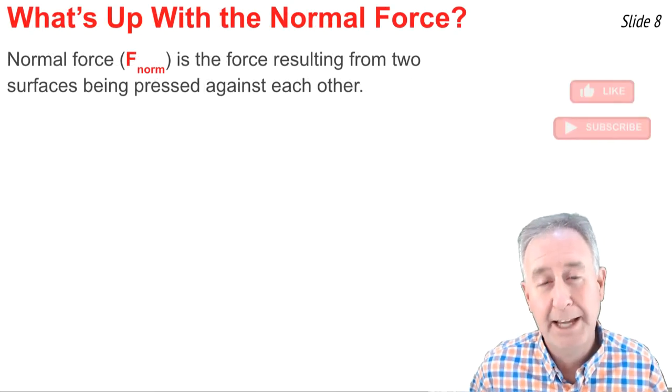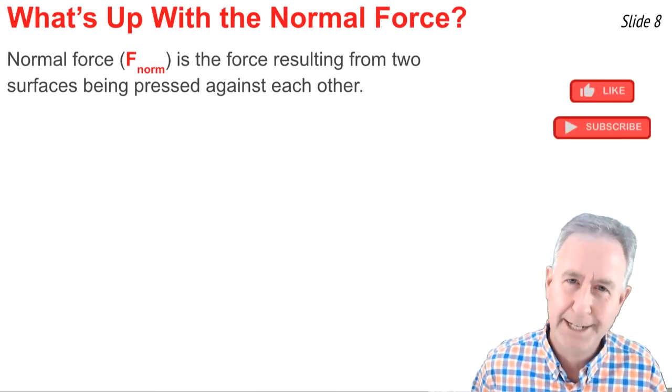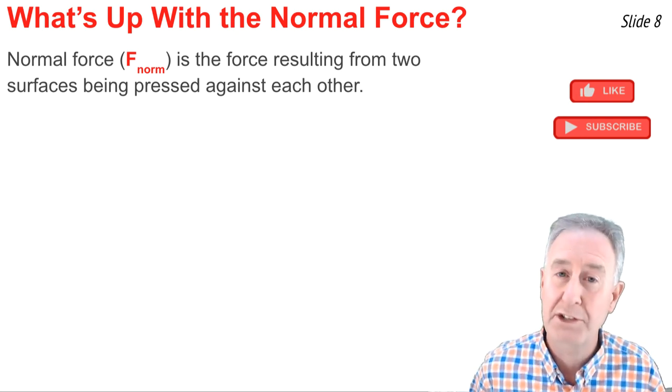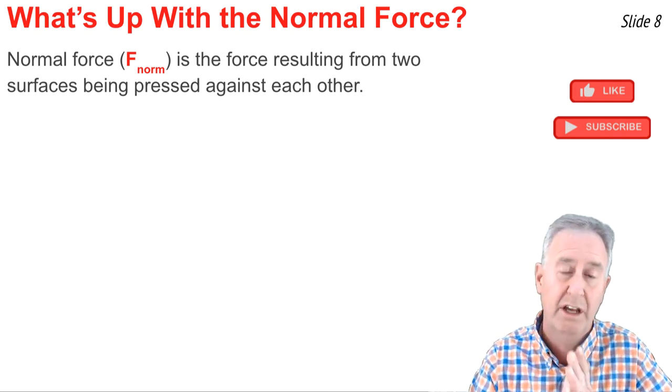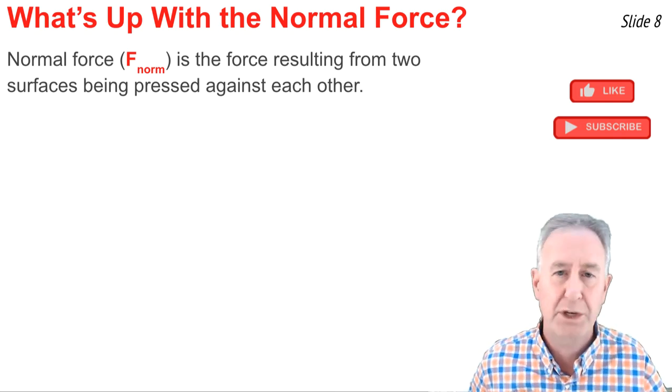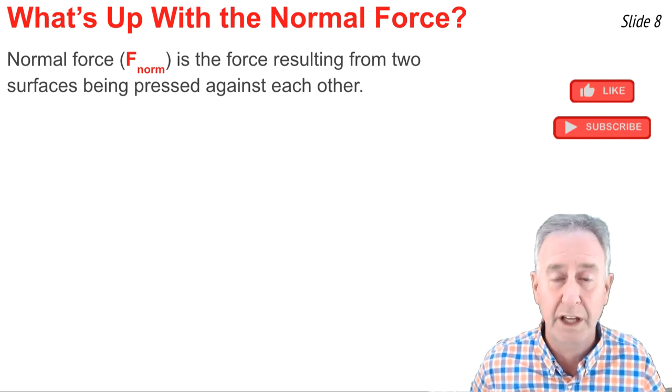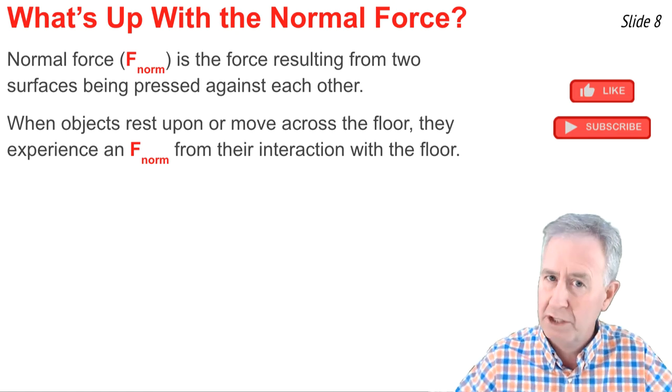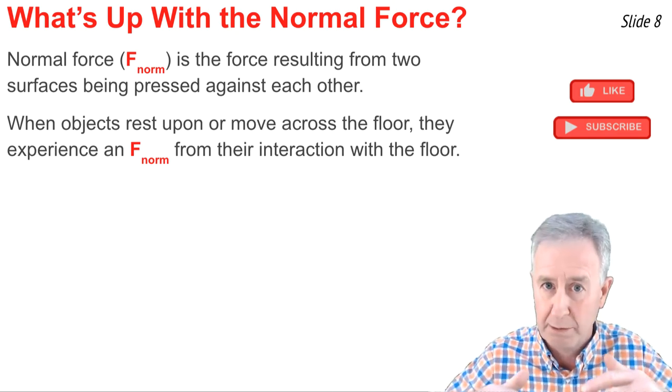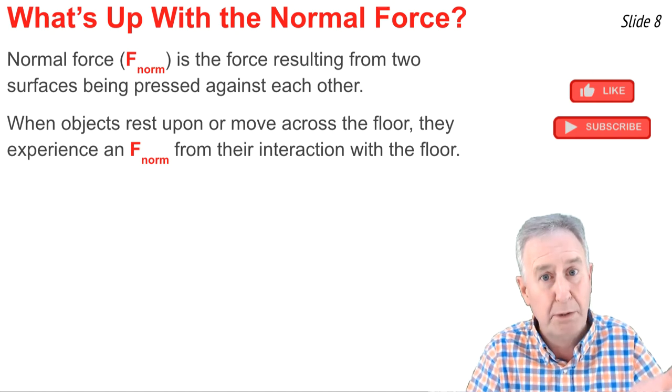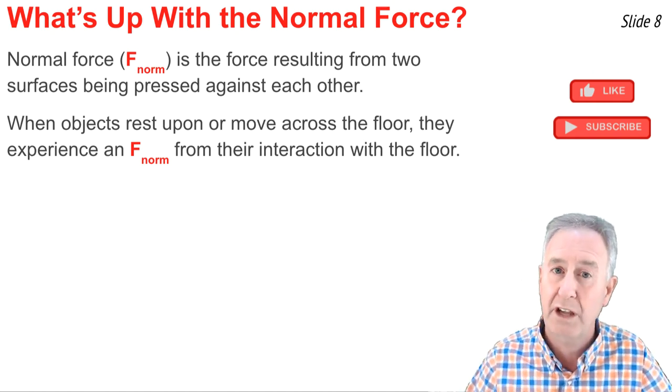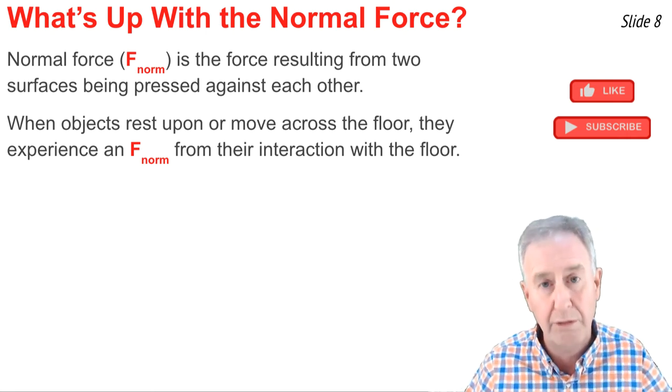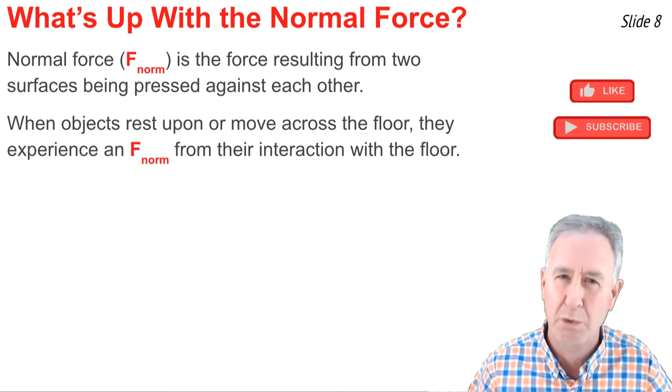Now something came up in that last question that I did not address, and if you caught it, it might have bothered you. And it has to do with the normal force. The normal force is simply the force that exists when two surfaces are pressing against each other. If you put a box or object on the floor, whether it's just at rest or even moving, that box and the floor begin to press up on one another. The weight of the object pulls it downwards, and as it's pulled downwards, it begins to press up on the floor, and the floor begins to press up on the object. The two surfaces are pressed together, and the result is there's a force on that object by the floor. We call this force the normal force and represent it by F norm.